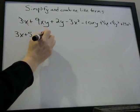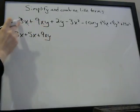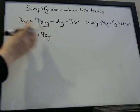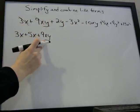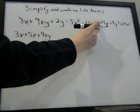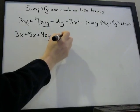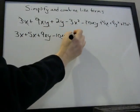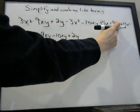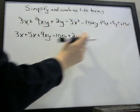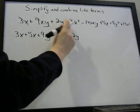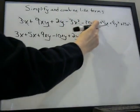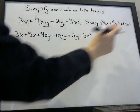Next term is 9xy. I'm just rewriting this so that we can combine terms and it's easier to see — I'm not doing any math, just getting like terms next to each other. 9xy — and here's another xy — so minus 10xy. Next term is y, so plus 2y. That's an x squared and that's a y squared, so those are not the same. And there's an x squared, so minus 3x squared — just by itself for now.